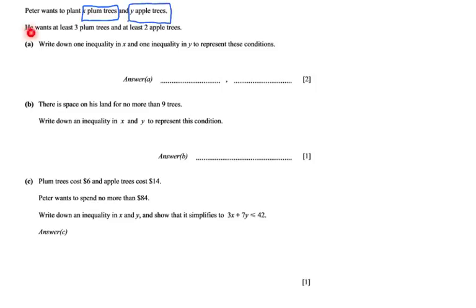He wants at least three plum trees and at least two apple trees. That word 'at least' is going to be important in a minute. Three plum trees, that is X, and at least two apple trees, which is Y. Write down one inequality in X and one inequality in Y to represent these conditions. For two points, I've got to give two inequalities, one point each.